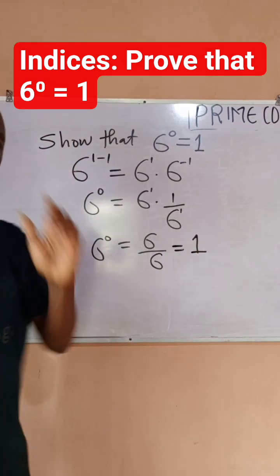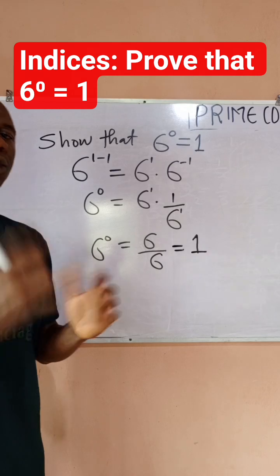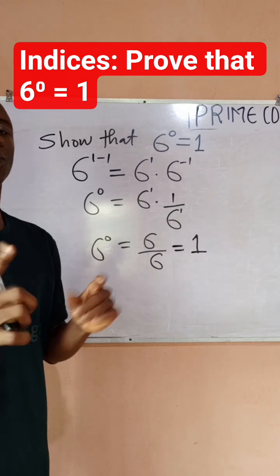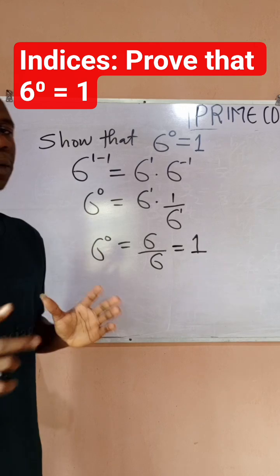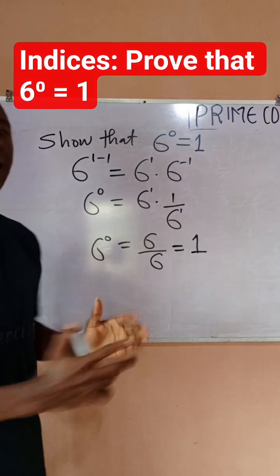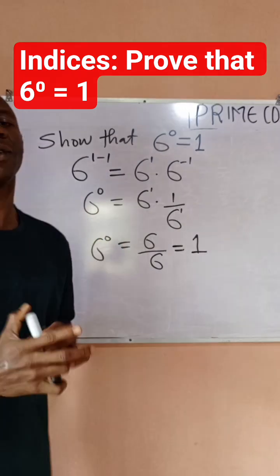So with this we have been able to prove that any number raised to power 0 should be 1, with exception to 0 and some few numbers. I believe this concept is clear. Thanks for watching Prime Concept.